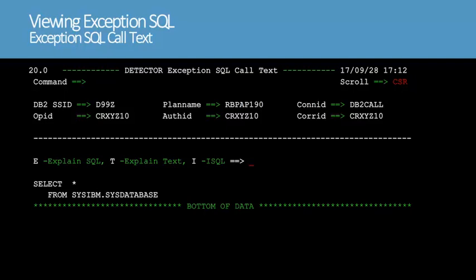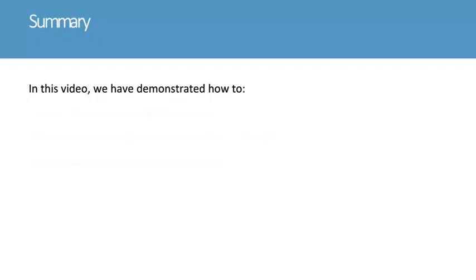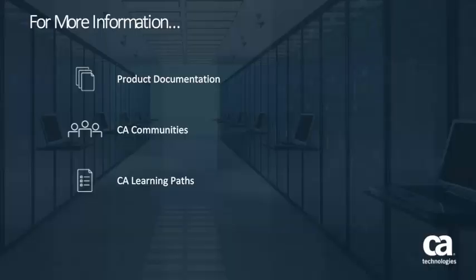The exception SQL call text display shows the SQL call text that generated the exception. In your environment, you can use this information to determine the cause of performance problems. This concludes the Collecting and Viewing Exception SQL with CA Detector for DB2 for ZOS demonstration. In this video, we have demonstrated how to create and modify a collection profile, select exception options when starting a collection, and view SQL exceptions during collection. Thank you for viewing this video. For more detailed information about CA Detector for DB2 for ZOS, click the information bubble in the top right corner to load the product page. From there, you can go to the product documentation, visit the CA communities, or see the learning path.